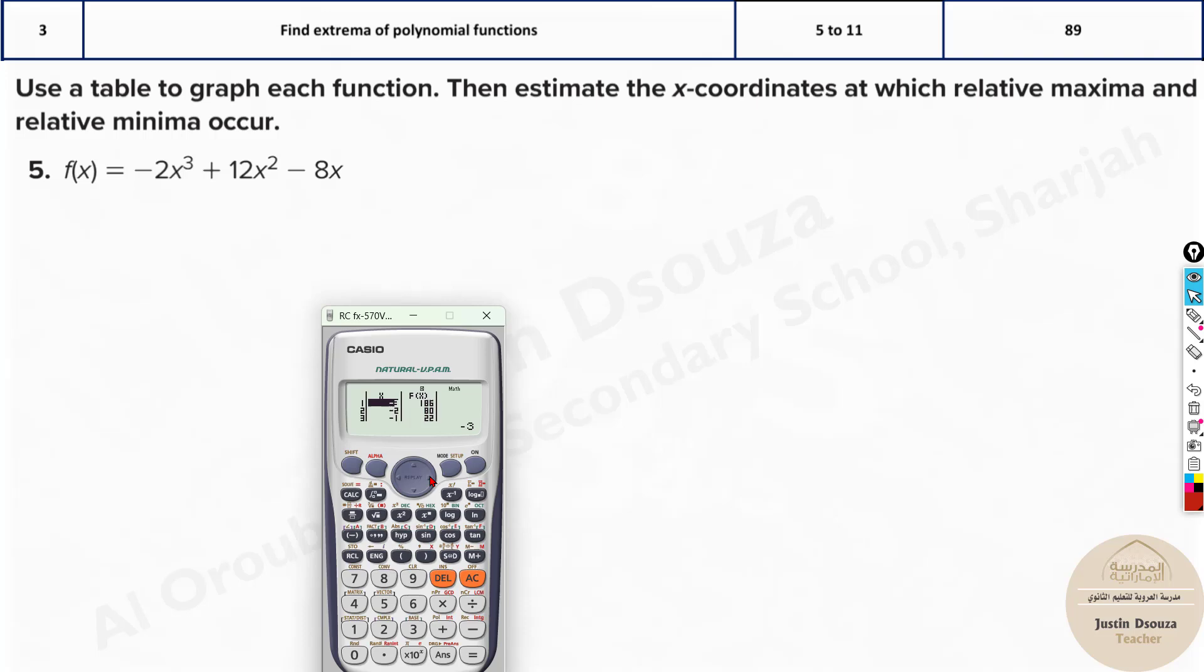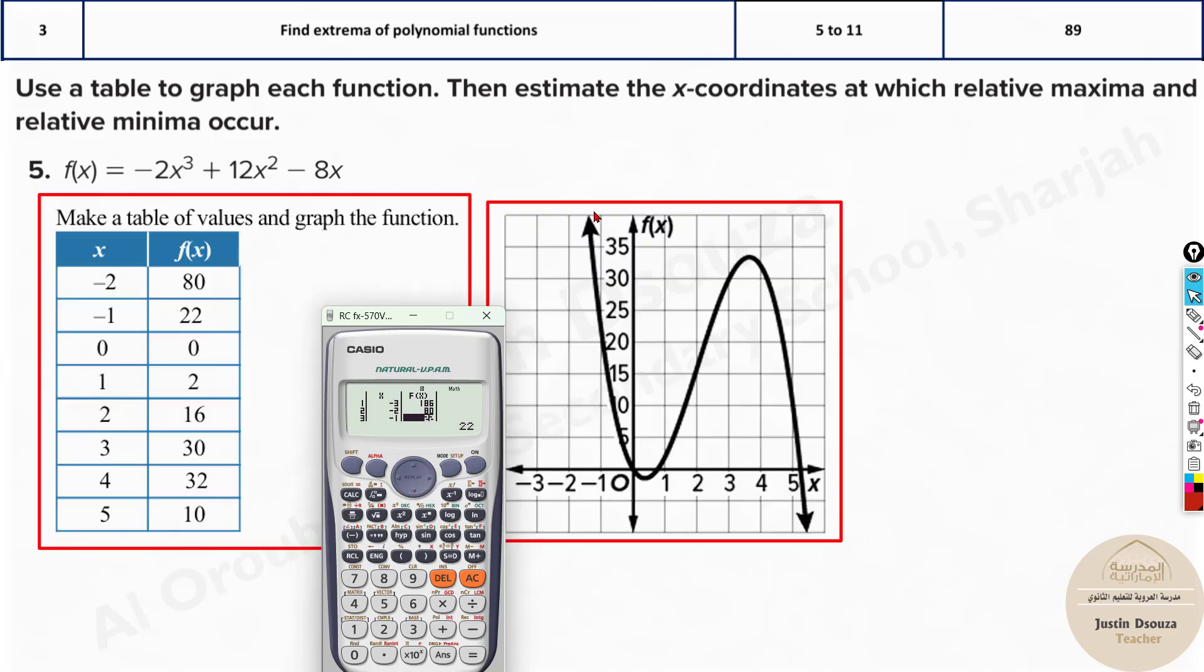And you can see here the values are given of the graph. Now this is how you can easily deduce the graph. If the options are 4 graphs, that's it, you can easily calculate it out. Now you can see here it starts with minus 3 which is 186 which is too huge. For minus 2 it is about 80. Minus 1 is 22, yes that's approximately correct. 0 is 0 and 1 is 2, 2 is 16, 3 is 30. You can see as again it increases.